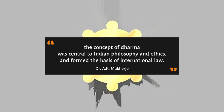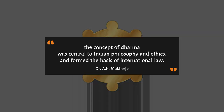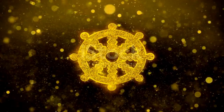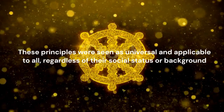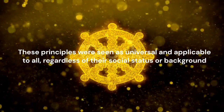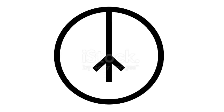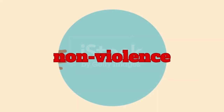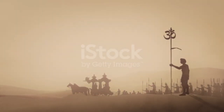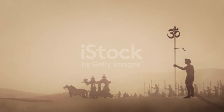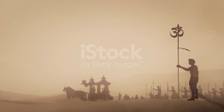In the 5th century BC, the Manupada law appeared. According to Dr. A.K. Mukherjee, an expert in international law, the concept of dharma was central to Indian philosophy and ethics and formed the basis of international law. Dharma referred to the moral and ethical principles that governed individual conduct and social behavior. These principles were seen as universal and applicable to all, regardless of social status or background, and included principles such as non-violence, respect for human dignity, and the pursuit of justice. These principles were reflected in early Indian texts such as the Mahabharata and the Manu Smriti, which outlined rules for the conduct of war, the treatment of prisoners, and the resolution of disputes between states.